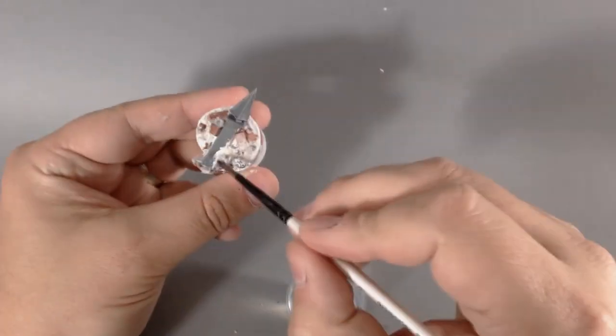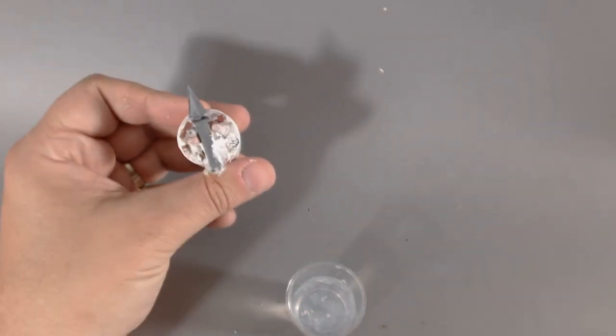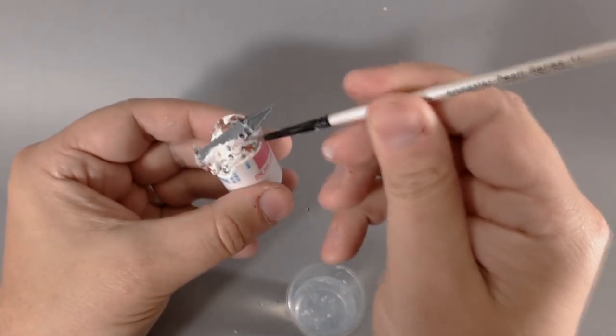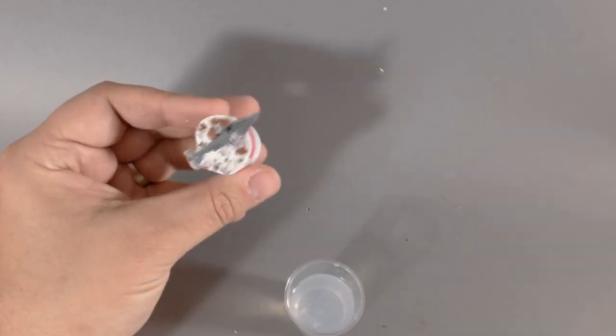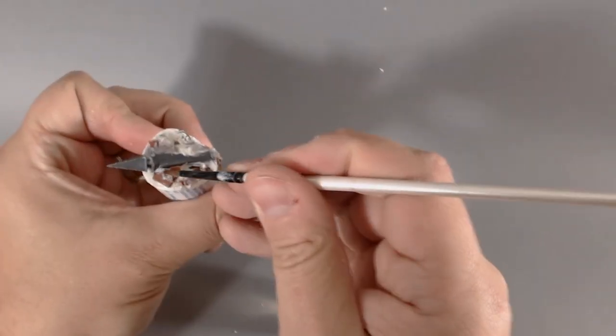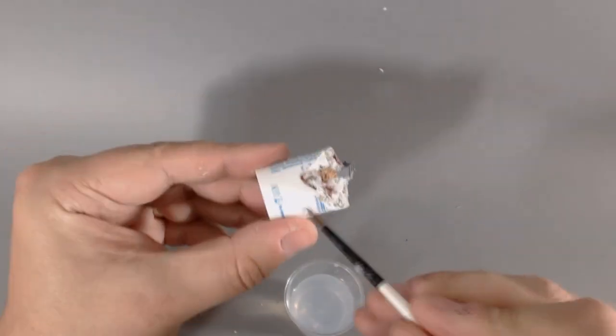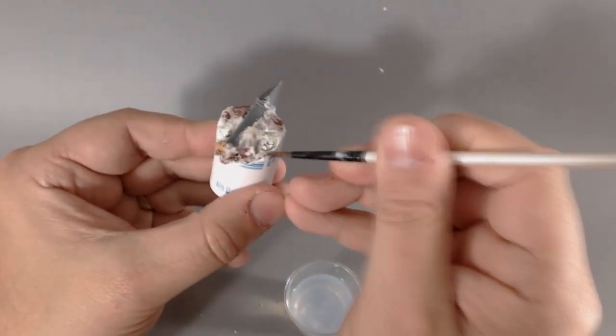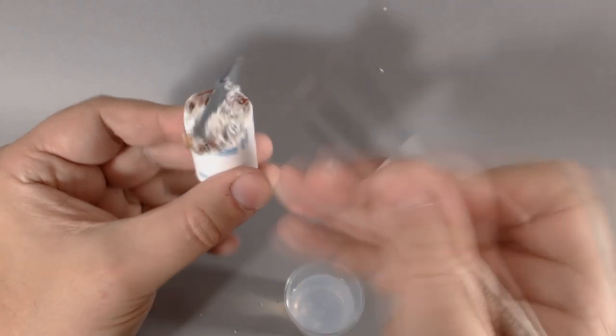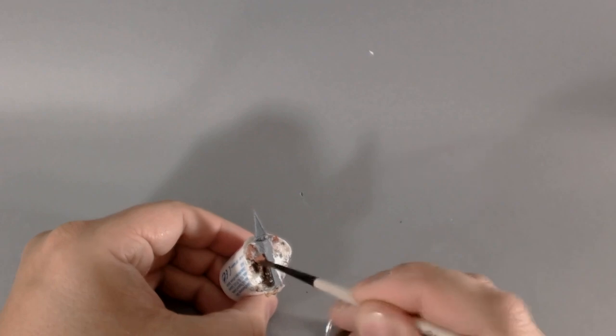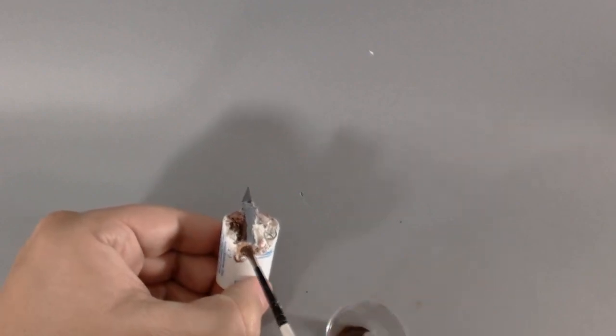Now to get that next layer of detail, I'm going to use some of the GW Typhus Corrosion. I know they've made this as a wash you can put on your painted models, but I quite like to use it in my basing.